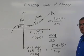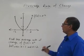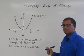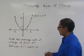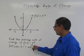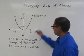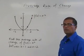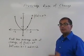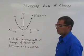So let's take some examples. Suppose I have a function f of x equals x squared, and I want to find the average rate of change of f of x equals x squared between x equals 1 and x equals 2.